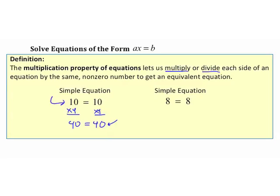Now let's look at division with another simple equation. Starting with 8 equals 8, I can divide both sides by 2. When solving equations, we use the fraction bar form for division rather than the traditional division sign. 8 divided by 2 is 4 on each side — we still get a true equivalent equation. So as long as we multiply or divide both sides by the same number, we end up with a true equivalent equation.